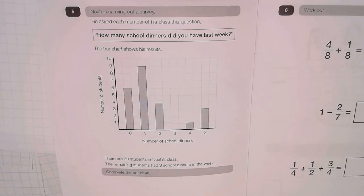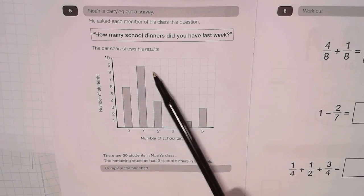Question 5. Noah is carrying out a survey. He asked each member of his class this question: How many school dinners did you have last week? The bar chart showed his results.